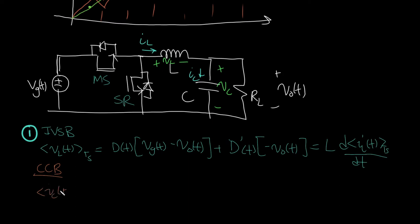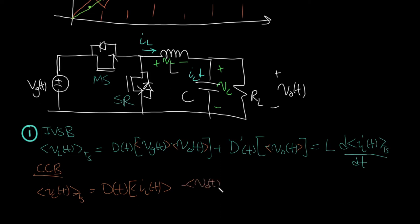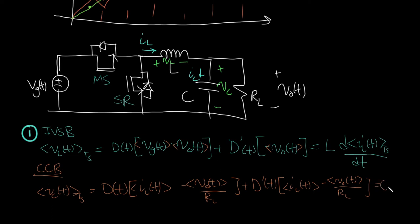For CCB, the averaged IC(t) over one switching cycle equals D(t) times (IL(t) − Vout(t)/RL) in the first half, plus D′(t) times (IL(t) − Vout(t)/RL) in the second half. This equals C times the time derivative of the averaged capacitor voltage Vout(t). Note that VC is actually Vout in this case.